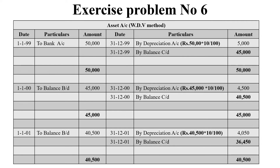Next is the written down value method. On 1st January 1999, we have purchased machinery for 50,000. As on 31st December 1999, the depreciation value is 5,000 — that is 50,000 into 10 by 100. So we are getting the balancing figure of 45,000, which is transferred to the next year. That is the value of the asset as on 1st January 2000: 45,000.